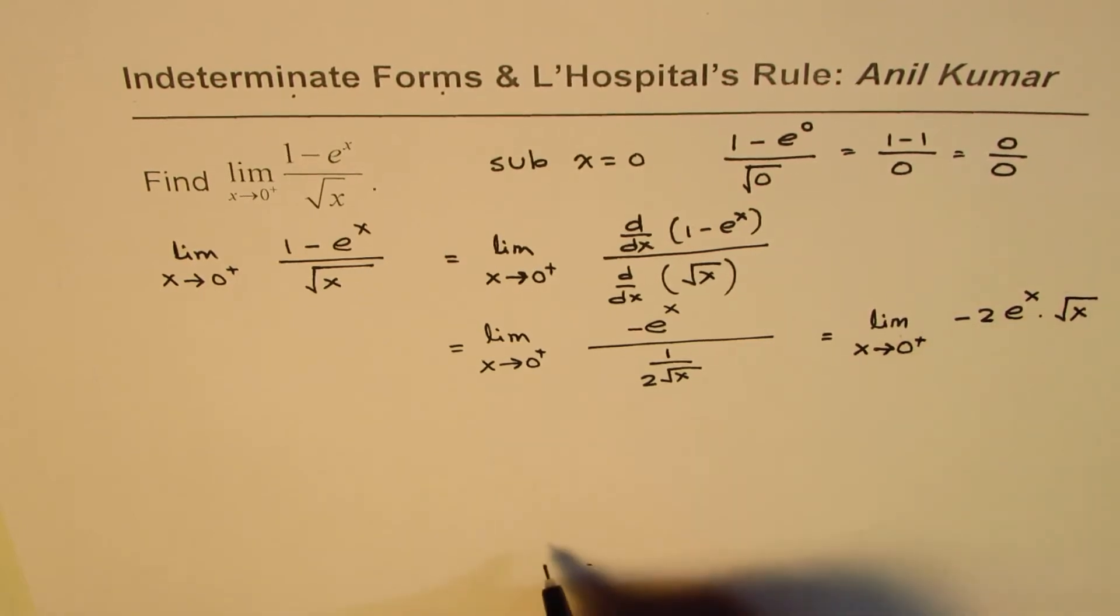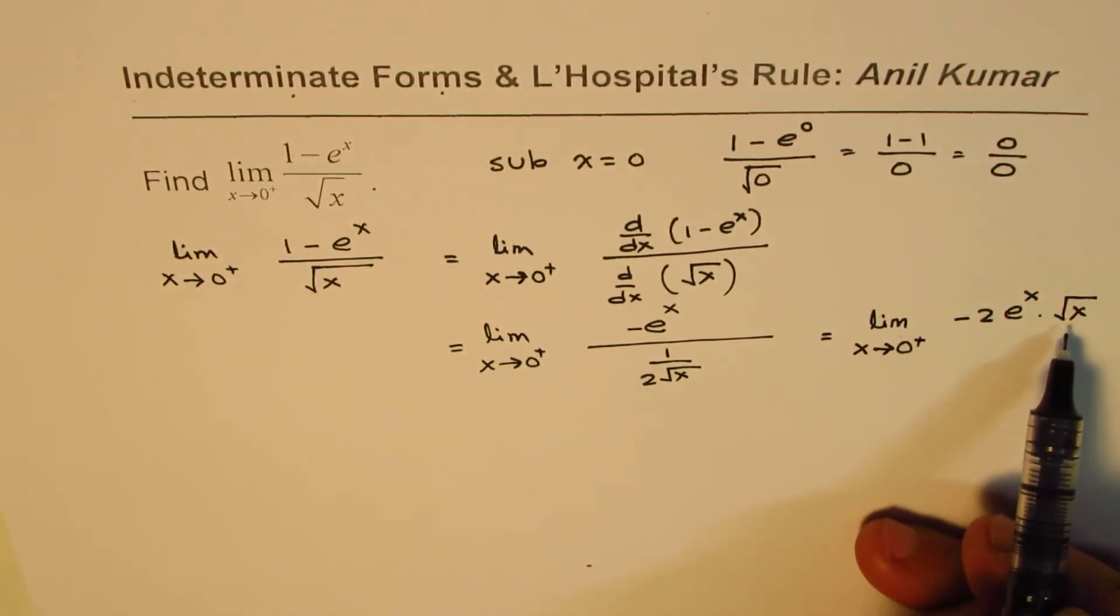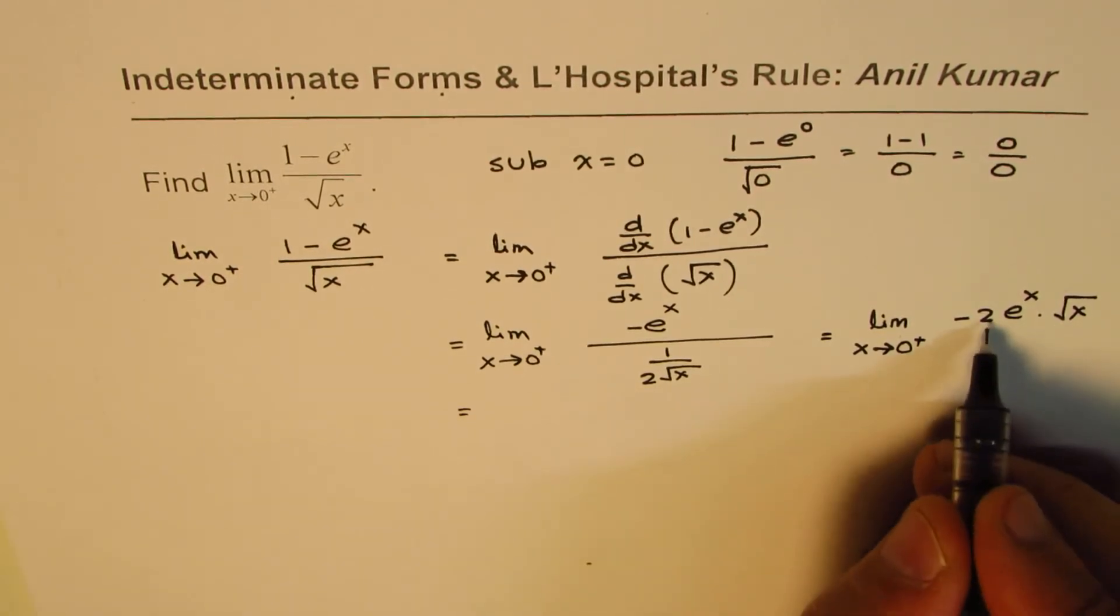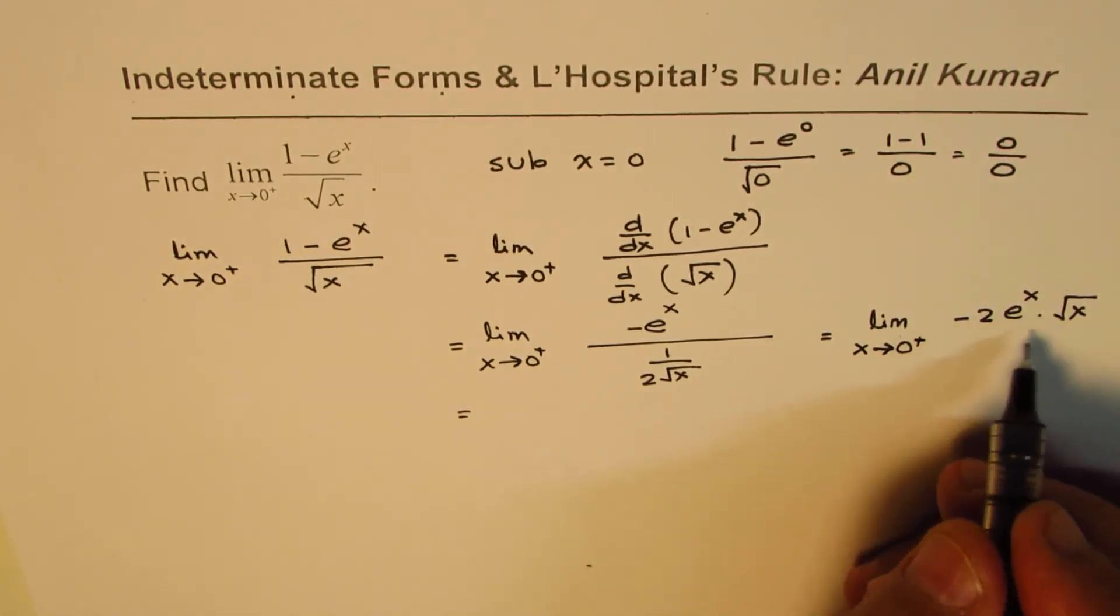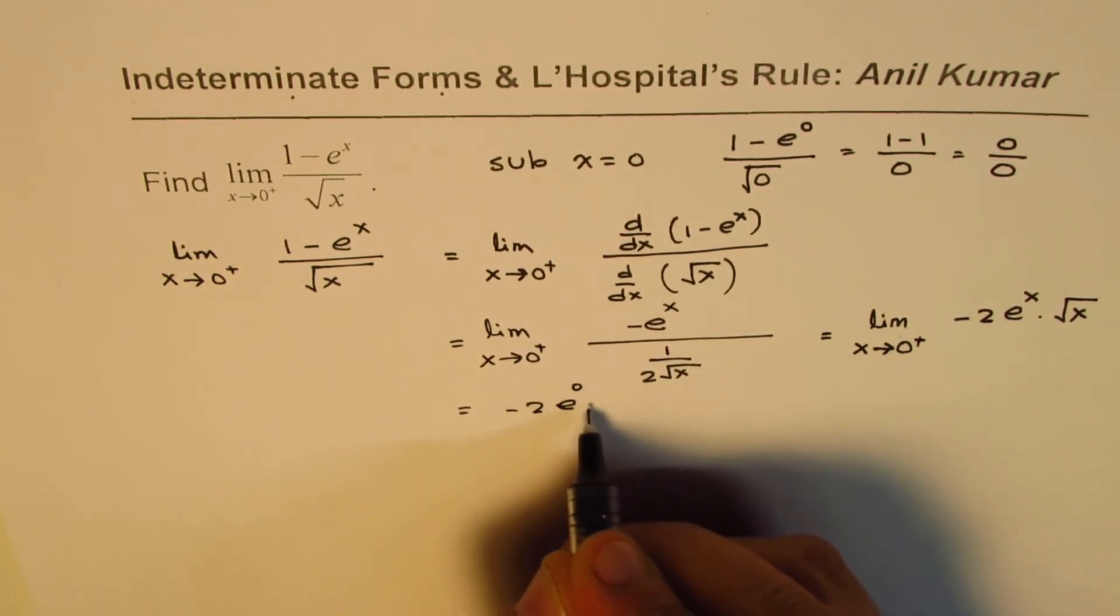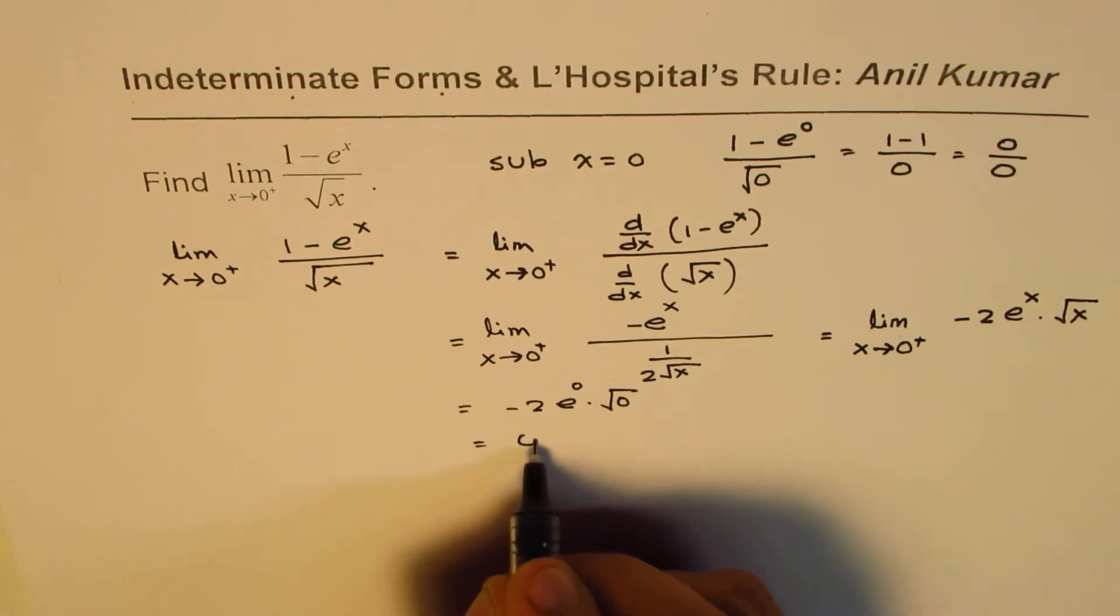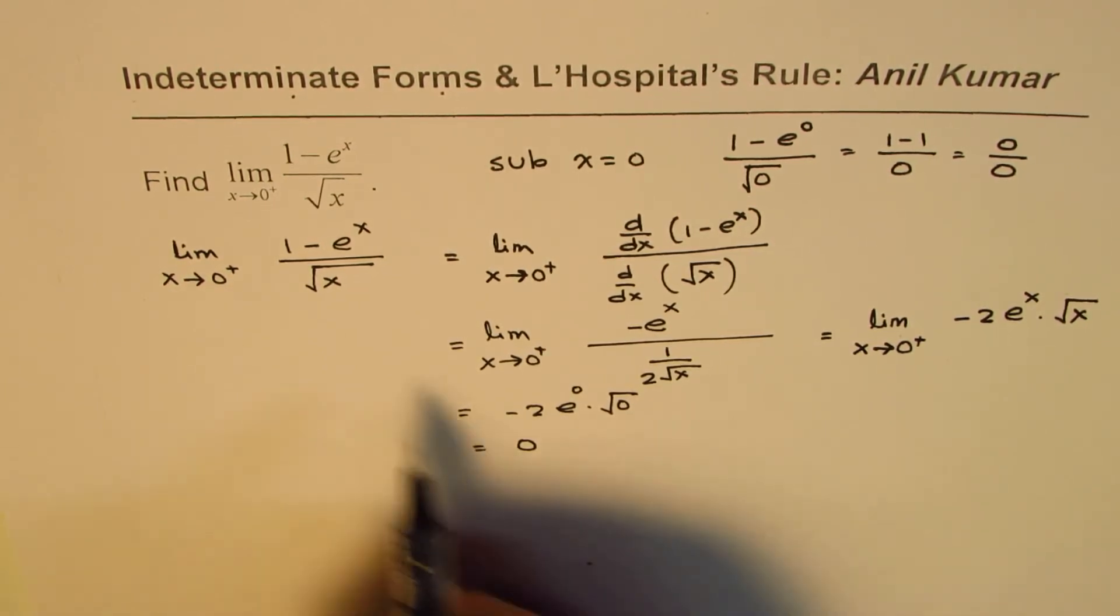2e^0 times square root of 0, and that gives me 0. And therefore the limit for the given function, limit x approaches 0+ for (1 - e^x) over